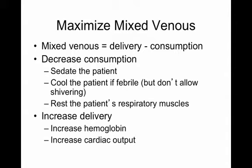To maximize mixed venous, we have two approaches: decrease consumption or increase delivery. For decreasing consumption: if the patient is breathing spontaneously, up to 20% of cardiac output can go to respiratory muscles—so don't let them breathe spontaneously. If they're agitated and moving around, sedate them. If they're febrile, cool them—but don't allow shivering, because shivering skyrockets oxygen consumption.